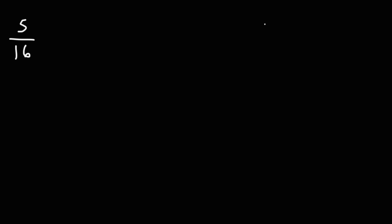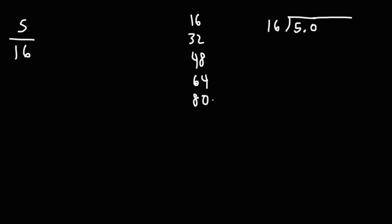For the sake of practice, let's work on another one. Let's say we have 5 over 16. So let's put the 16 on the outside, the 5 on the inside. Now 16 doesn't go into 5, so let's add a 0. How many times does 16 go into 50? Let's write down multiples of 16: 16, 32, 48, 64, 80, 96. Just keep adding 16.